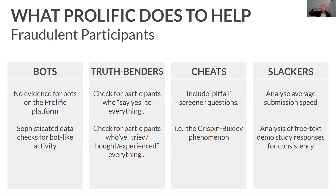And the final group are slackers — participants that are just really unmotivated to give you good data. There are a whole bunch of reasons why that might be the case — maybe they don't feel they're being fairly rewarded for their time, or they're watching something on TV while completing your study. One of the ways we can check for this is to look at each participant's average submission speed. If their average submission speed is really short, they're likely just clicking through studies as quickly as possible to get to the payment. If it's very long, they're probably not paying much attention to the study.